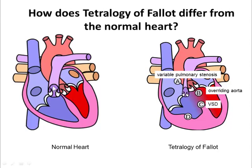In general this results in a reduced amount of blood going to baby's lungs after birth. The fourth feature is a thickening of the wall of the right pump, the right ventricle. This isn't a common finding before birth in the fetus, but it is seen in babies and children who are left for some while without surgery.